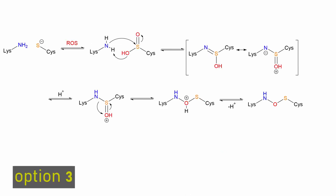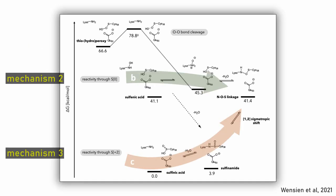The third option is the oxidation of the thiolate to sulfenic acid and then a sigmatropic 1,2 rearrangement driven by orbital steering. Calculations reveal that the second proposed mechanism is the most likely.